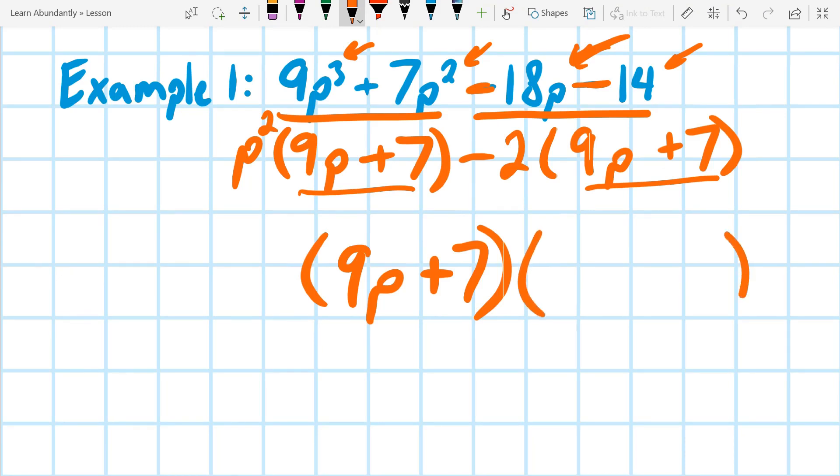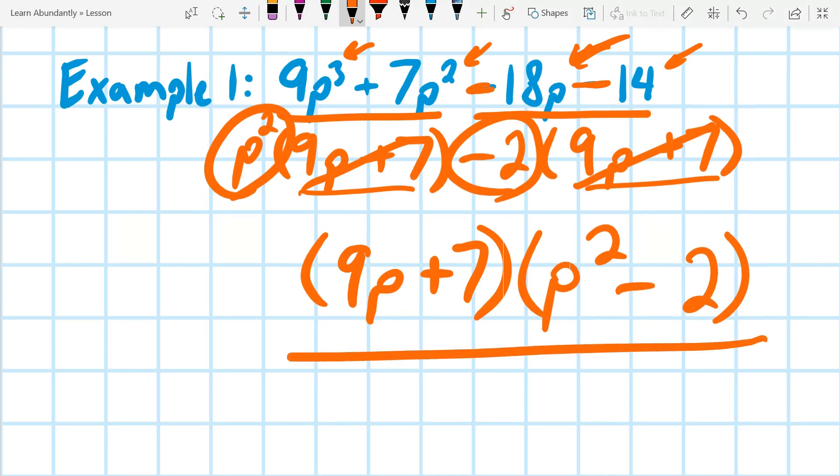The catch is, what's our second factor? It's not going to be 9p plus 7 both times. If we look right here, it gives away our second factor, p squared minus 2, and that is how we factor polynomials with four terms.